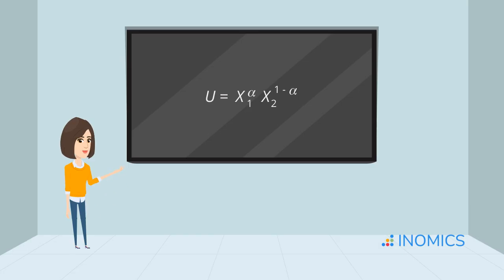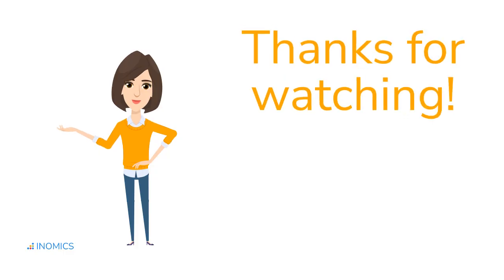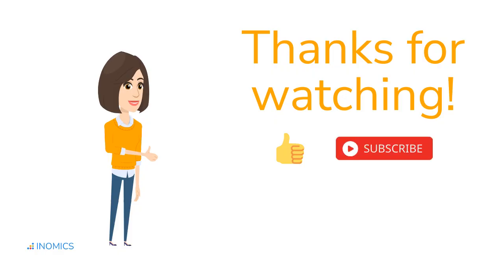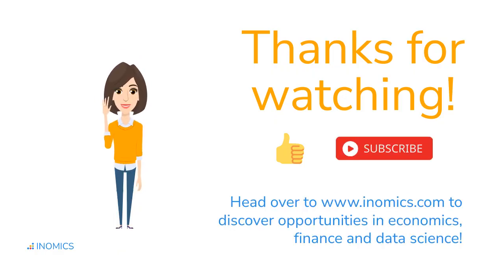The Cobb-Douglas production function — a century-old idea — continues to influence how economists understand productivity, technology, and efficiency today. From the factory floor to the aggregate economy, it remains a foundational tool in economic analysis. If you found this explanation useful, give this video a thumbs up and subscribe for more economics deep dives. Thanks for watching, and see you in the next one!